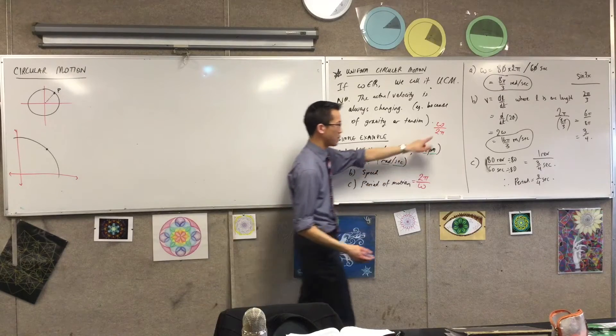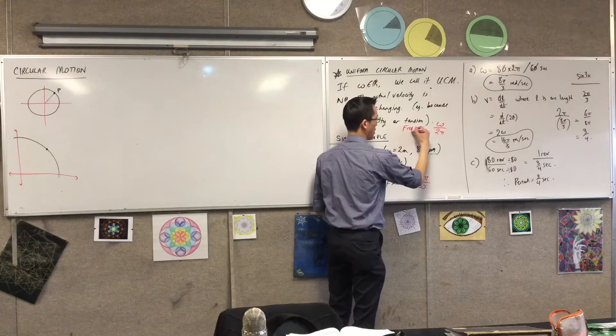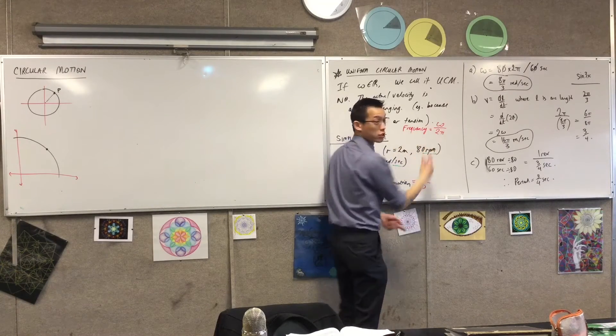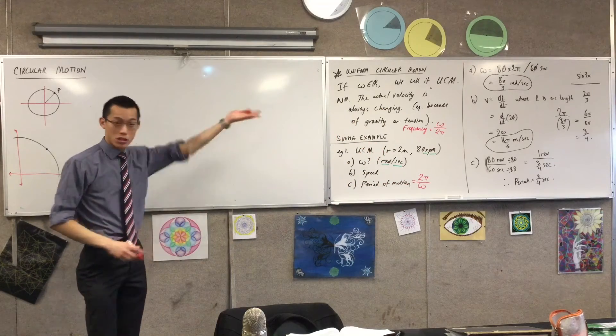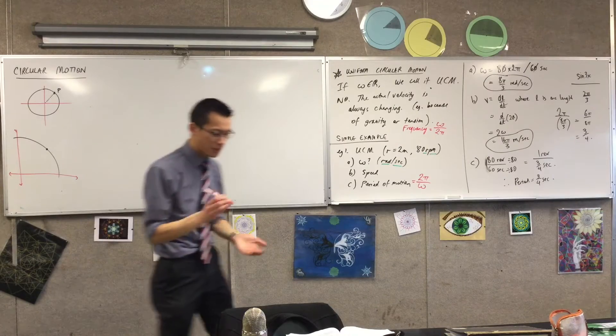So sometimes you'll be asked for this, sometimes you'll be asked for that, frequency. And you of course can just logic it out, just think about what's going on. Like 80 revolutions per minute, I can work that out. Or you can just use these formulas if you're happy with that.